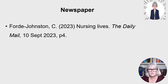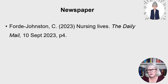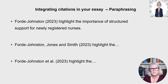For a newspaper article, you have the author's surname, initial with a full stop, then the year of publication, then the title of the article with a full stop, then the newspaper name in italics with a comma, then the date of publication, then the page number preceded by 'p.' so it's clear it refers to a page rather than an issue or volume number.